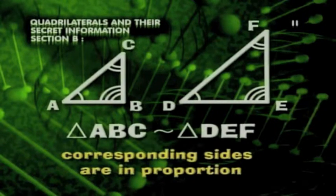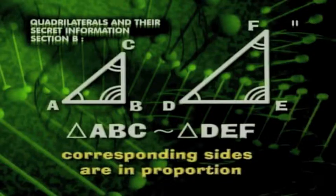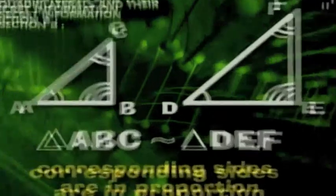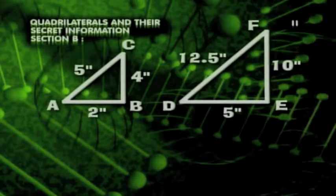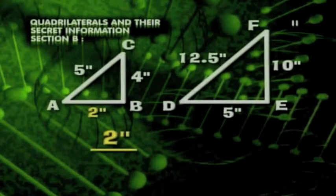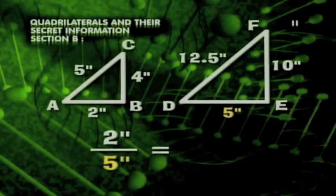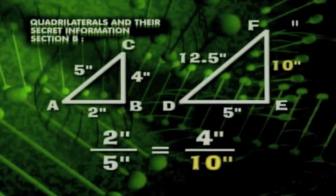Second, the sides will be in proportion. Let's take a closer look at what we mean by sides being in proportion. Corresponding sides are in proportion when the ratio of the lengths of a side, in this case AB, and its corresponding side, DE, equal the ratio of the lengths of two other corresponding sides, say, side BC and its corresponding side, EF.